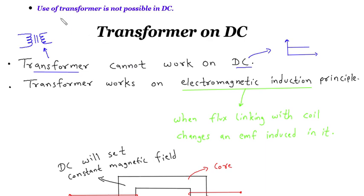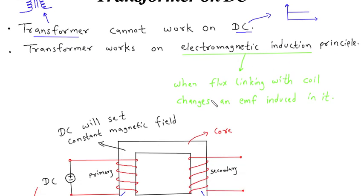Use of transformer is not possible in DC. Transformer cannot work on DC. Transformer works on electromagnetic induction principle. Electromagnetic induction is when flux linking with coil changes and EMF induced in it.